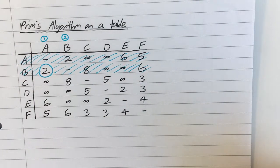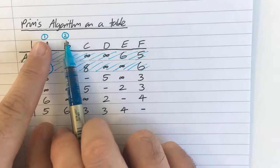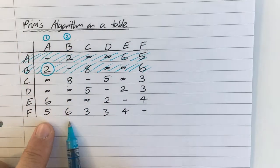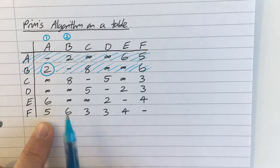And I just keep repeating that process. So, I look down now both of these columns, and choose the smallest one that's not crossed out, because I want the closest node to my tree, not just to the node I've just added.